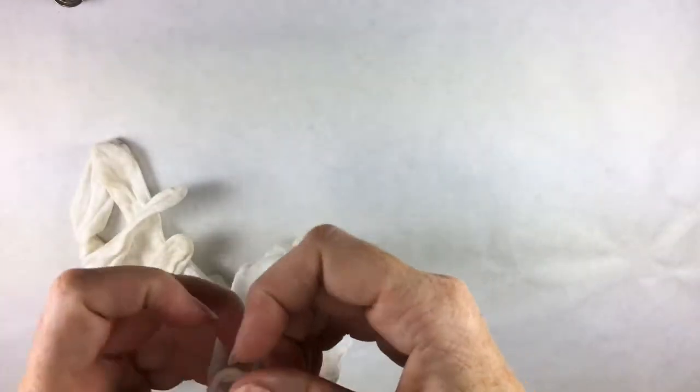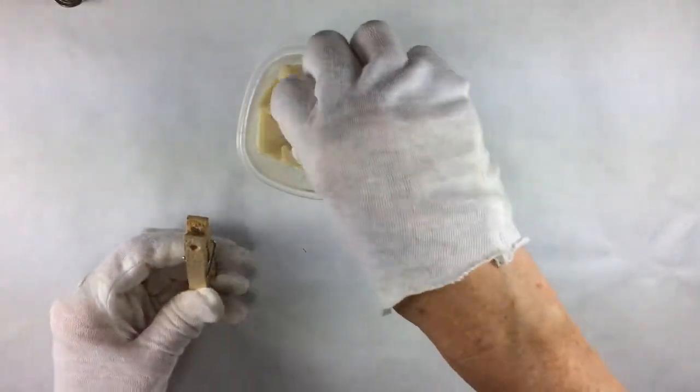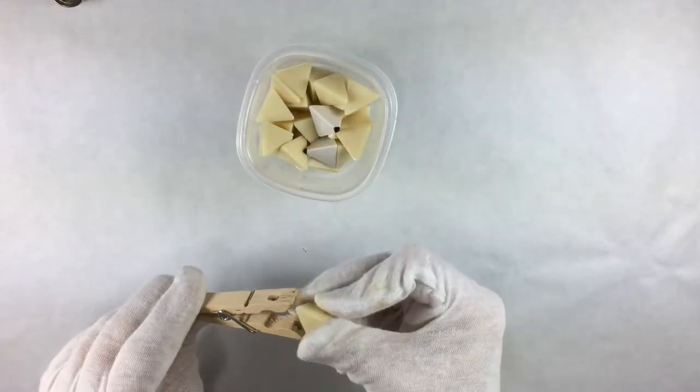Now since I went to all the trouble to clean those dice, I'm going to put on some more gloves. Not the neoprene ones anymore, these are just cotton gloves to keep my skin oils off of the dice. These are some I had from back when I used to do photography and you needed them for film.